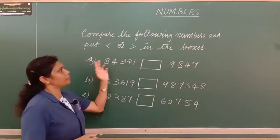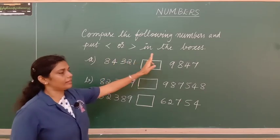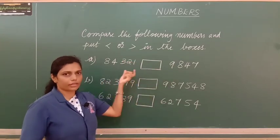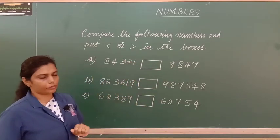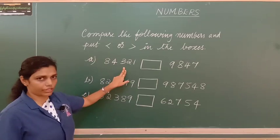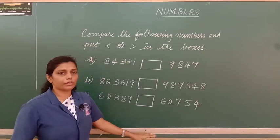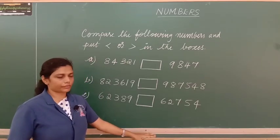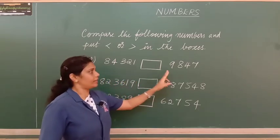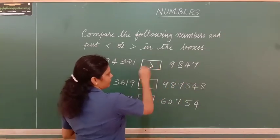The next problem is: compare the following numbers and put less than or greater than in the boxes. In the first one we have a 5-digit number and a 4-digit number. The number with more digits is greater, so 84,321 is greater than 9,847 and we put the greater than symbol.